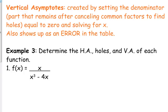This also shows up as an error in your table. So you can use your calculator as a tool to tell you where you're going to have holes and vertical asymptotes, but you've got to know which one's which in order to correctly identify them. So let's look at this example and we're just going to go through the list.